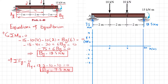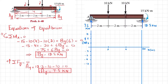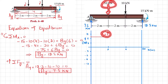Drawing the shear force diagram: at point A, x equals zero, the shear force is 7.5 kilonewtons — this point sits between 6 and 9. Moving from A toward the first load, there is no other force, so the shear force remains 7.5 — a horizontal line. At the first 10 kN downward load, the shear force drops: 7.5 minus 10 equals minus 2.5 kilonewtons.